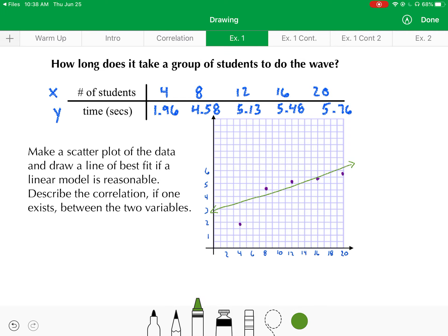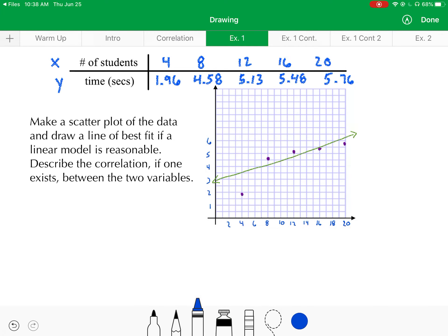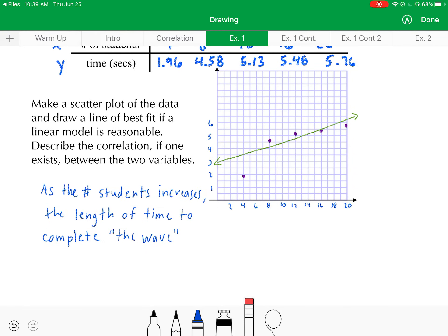In terms of describing the correlation, we're going to say that as the number of students increases, the length of time to complete the wave increases, which would be known, since both variables are increasing, as a positive correlation.